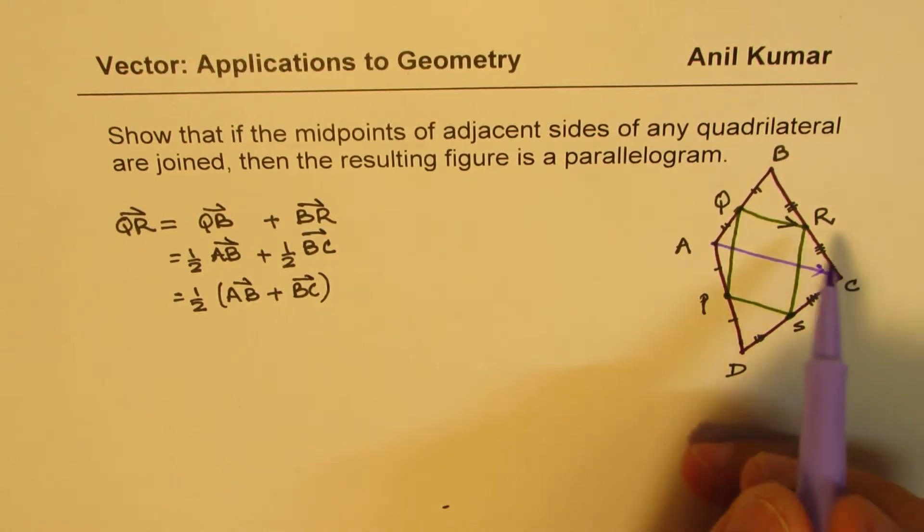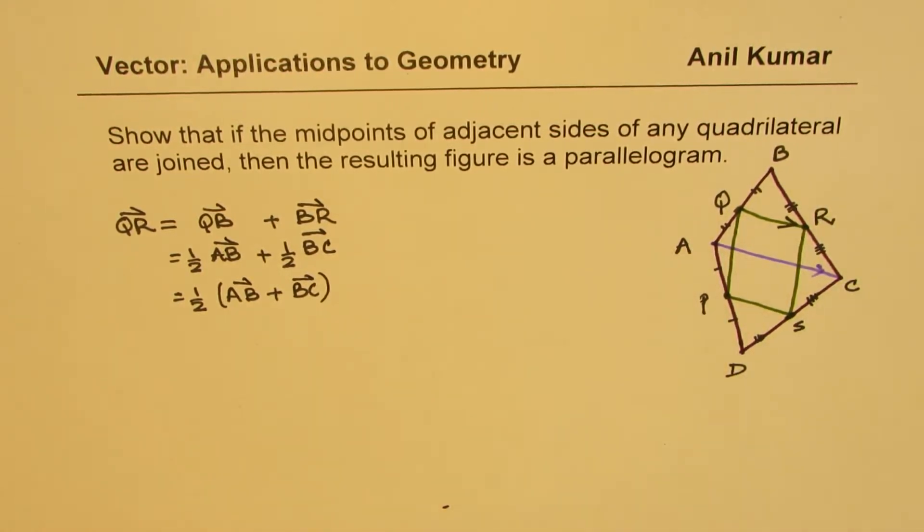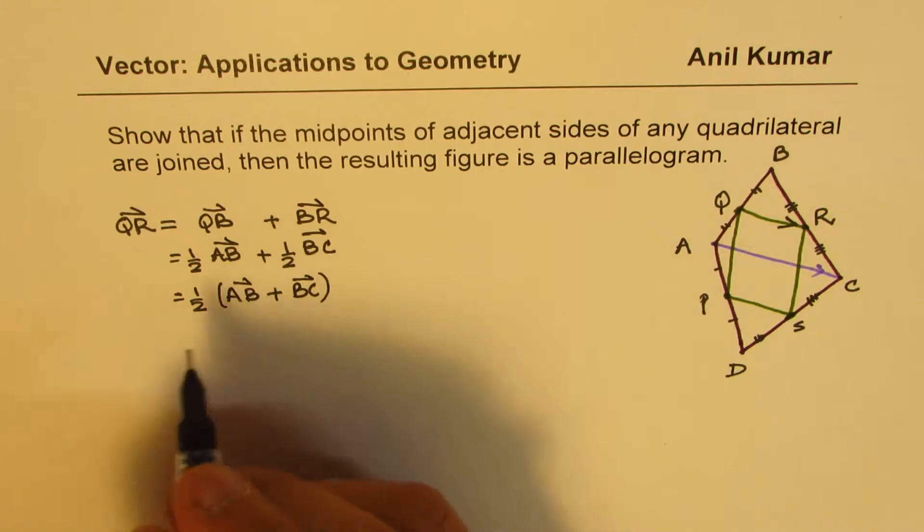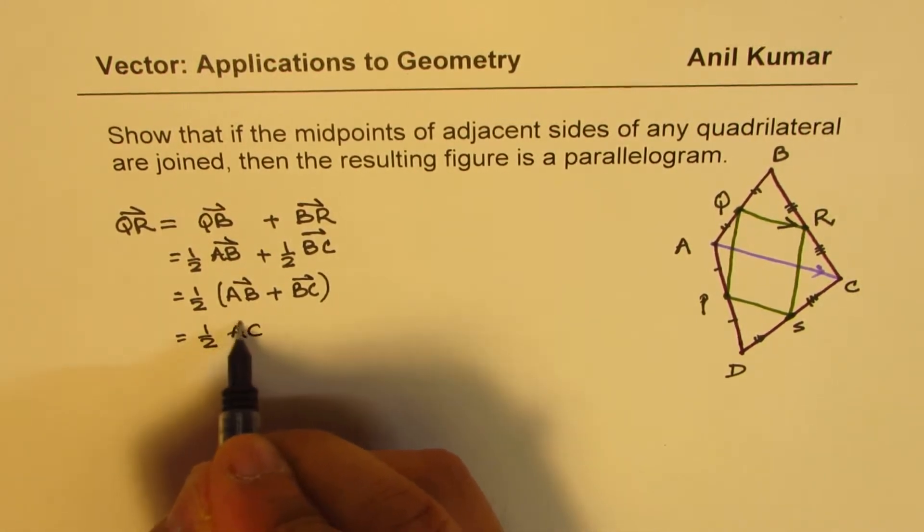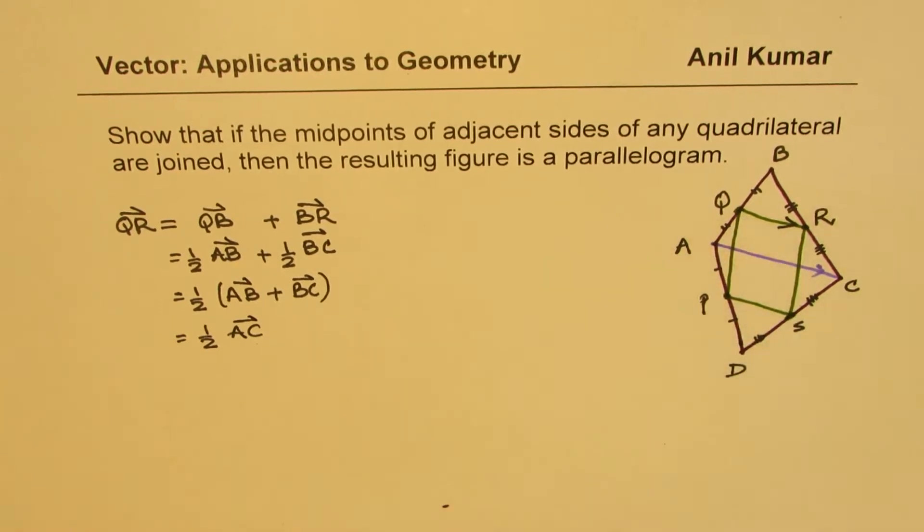So it is half of A to C. So this is equal to half of A, C. So we know what Q, R is.